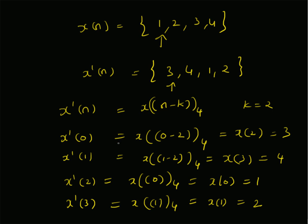So therefore, x'(n) is indeed equal to 3, 4, 1, 2. In this example, we studied how to shift an N-point sequence circularly. That is, given x(n) equal to 1, 2, 3, 4, the circularly shifted version of x(n) by 2 points is given by 3, 4, 1, 2. Thanks for watching.